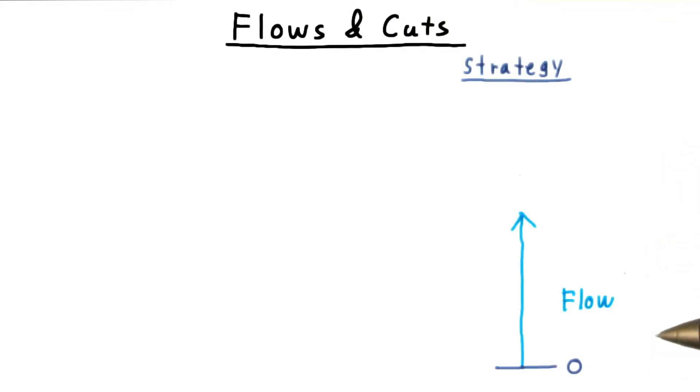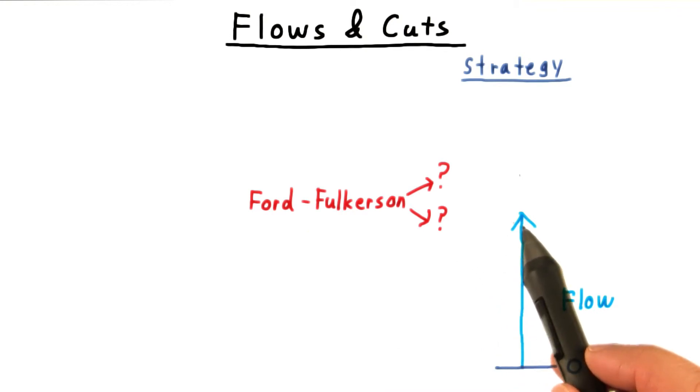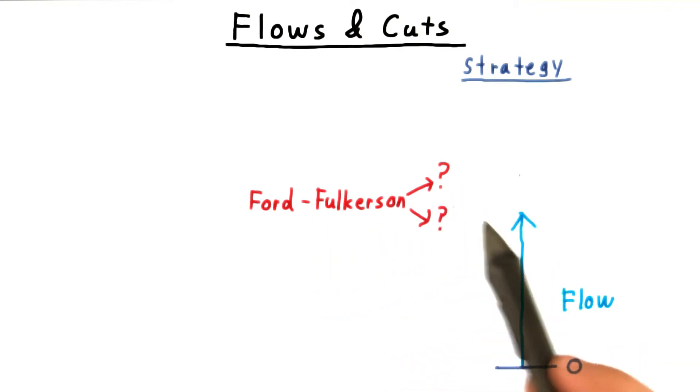Here's a picture of our understanding so far. We know that the network will have some possible non-negative flow values. But it's not exactly clear how high this range goes or where the results of Ford-Fulkerson fit in.